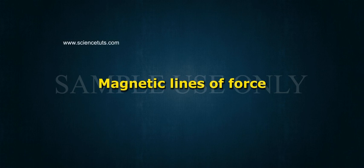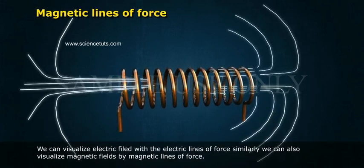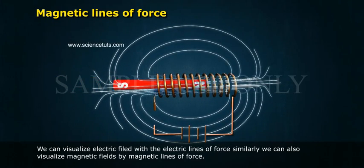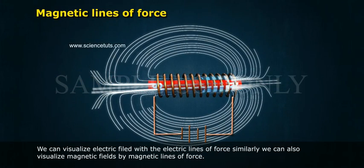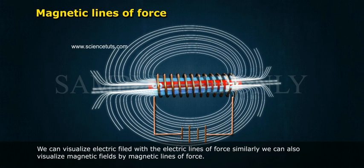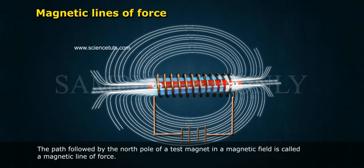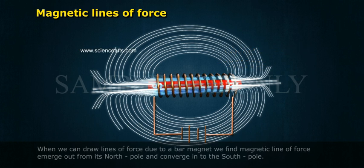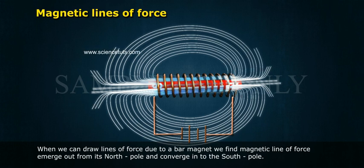We can visualize electric fields with electric lines of force; similarly, we can also visualize magnetic fields by magnetic lines of force. The path followed by the north pole of a test magnet in a magnetic field is called a magnetic line of force.